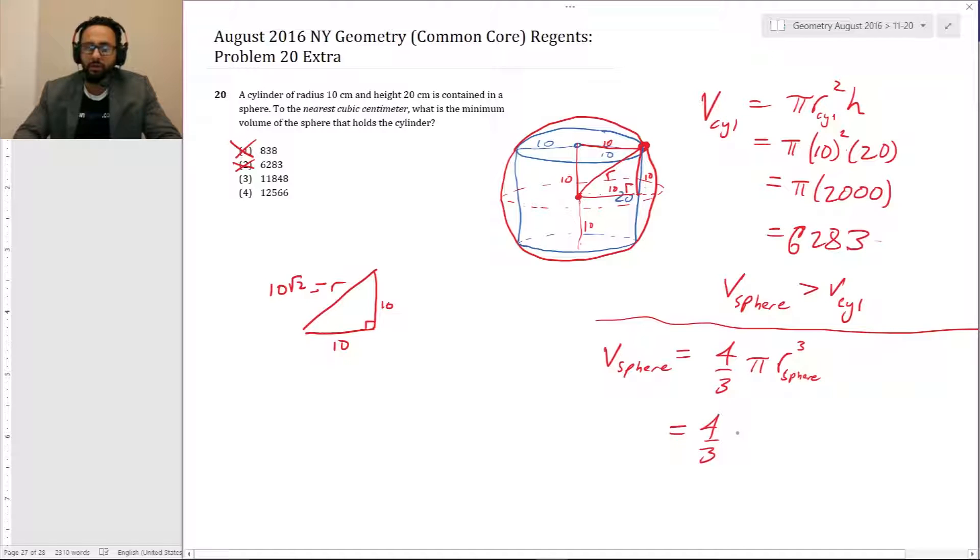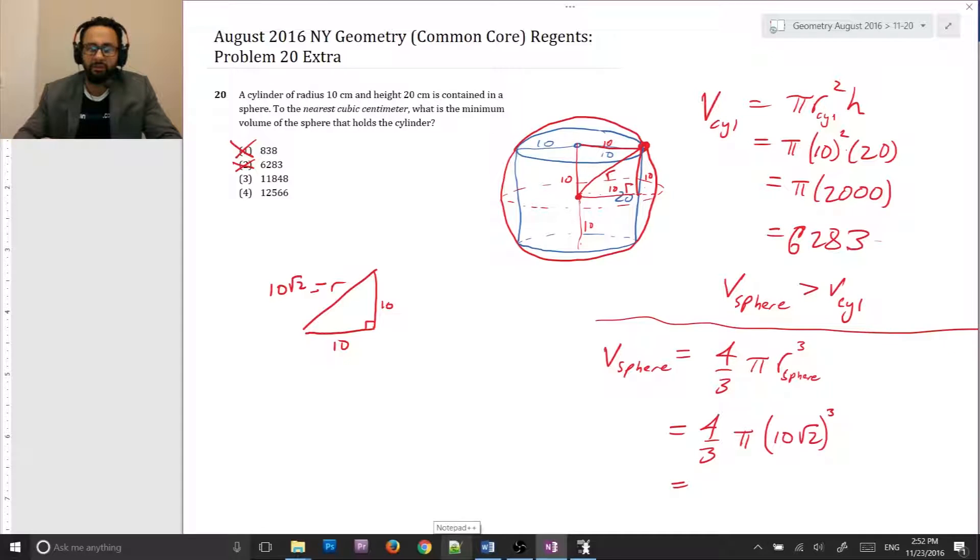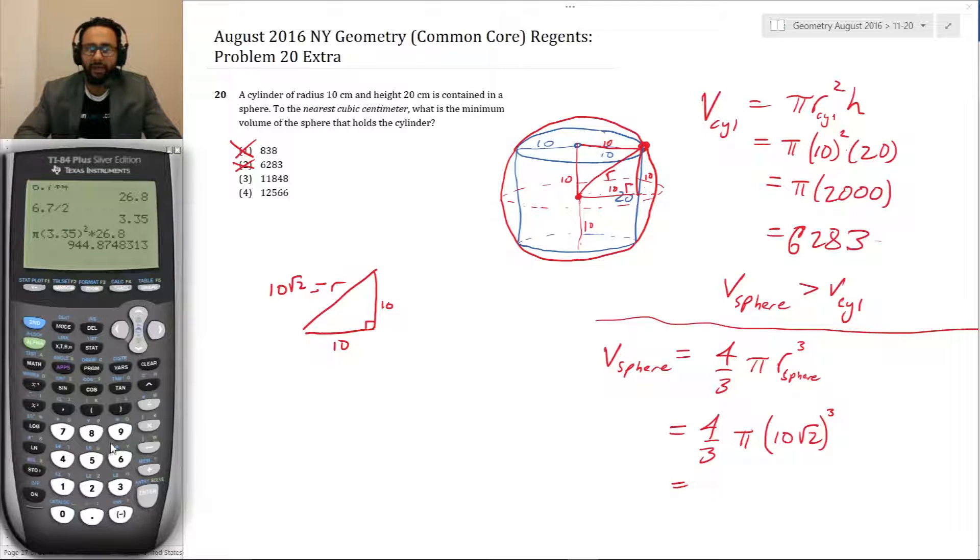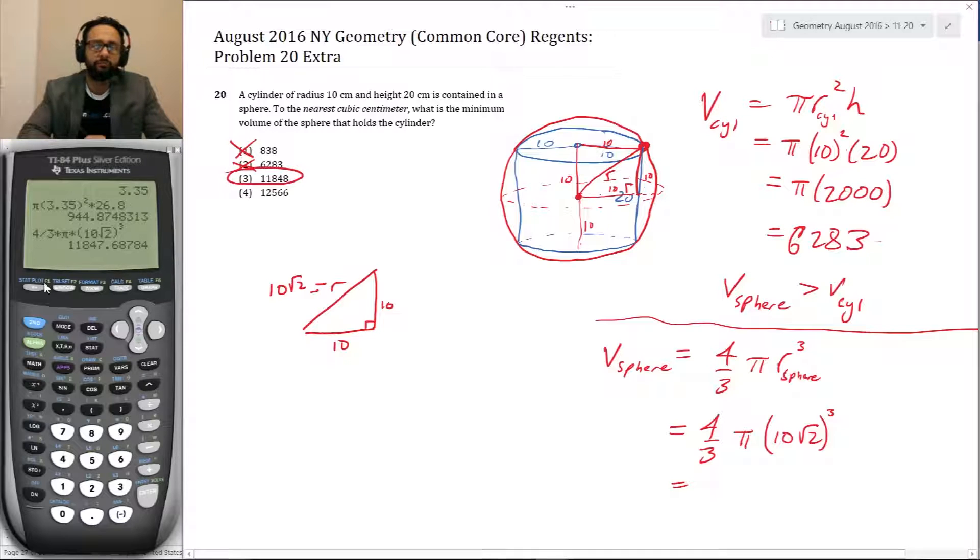So four thirds Pi, let's see, 10 radical 2 close parentheses cubed. And let's see what this is on the calculator. We know it's got to be a little bit bigger than 6283, but unfortunately the other answers are actually both pretty close to each other. So I can't intuitively determine which one of those the answer is. So four divided by three times Pi times the radius is 10 radical 2 to the power of three and 11847.68, 11848. Here's our answer. Okay. Wow. That was a tough problem, but look, I know you can do it.